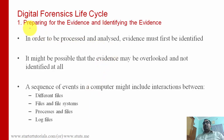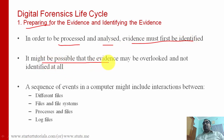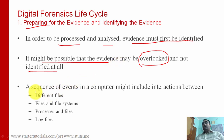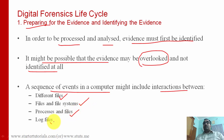The first phase is preparation. In order to be processed and analyzed, first of all we must identify the evidence, as it may be possible that the evidence is overlooked and not identified at all. This step is very important for solving the cyber crime, since solving the crime always depends on the evidence. A sequence of events in a computer might include interactions between different files, files and file systems, processes and files, and log files — all these are sources of evidence.